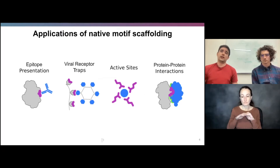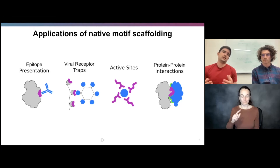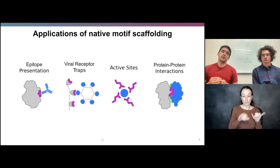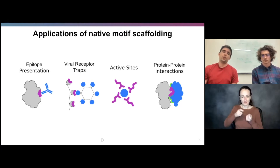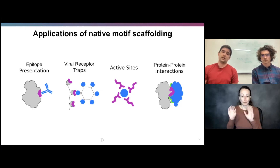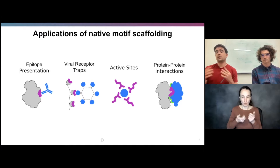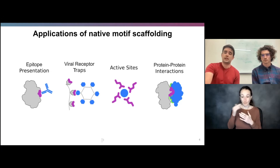Although we're certainly not the first people to be interested in transplanting functional motifs from native proteins into new proteins, the existing approaches either rely on finding a suitable native protein scaffold that can accept the functional motif, or doing a lot of sampling and packing with secondary structure elements, which takes a lot of trial and error. So we were wondering if, given the recent advances in deep learning, that might open up a third avenue for solving this problem.